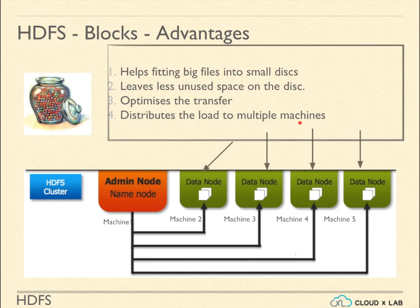Let us say a file is stored on 10 data nodes. Whenever a user accesses the file, the load gets distributed to 10 machines instead of one machine. It is very similar to downloading a movie using a torrent — the movie file gets broken down into small pieces and these pieces get downloaded from multiple machines in parallel, which helps in downloading the movie faster.